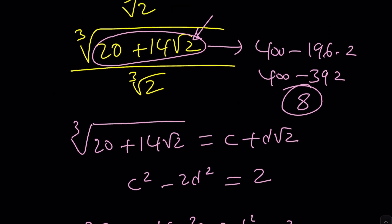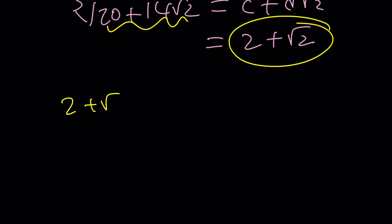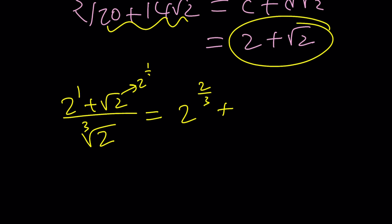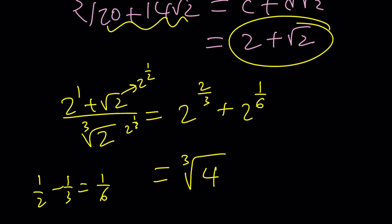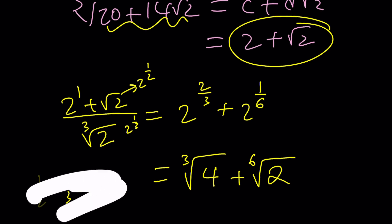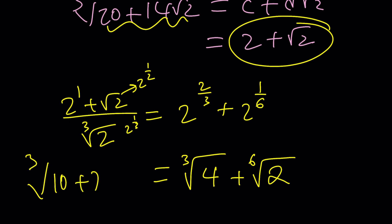We still need to divide by ∛2. So we take (2 + √2) ÷ ∛2. The term 2 = 2^1 divided by 2^(1/3) gives 2^(2/3) = ∛4. The term √2 = 2^(1/2) divided by 2^(1/3) gives 2^(1/2 − 1/3) = 2^(1/6) = ⁶√2. So the original expression, the cube root of (10 + 7√2), equals ∛4 + ⁶√2. You can verify this by cubing both sides.